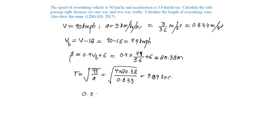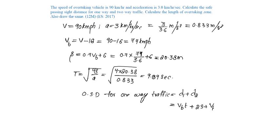The overtaking sight distance for one-way traffic is d1 plus d2, which is VB into reaction time plus 2s plus VB into T. VB is 74 by 3.6 meter per second, reaction time is 2 seconds, plus 2 into 20.38, plus 74 by 3.6 into 9.89.